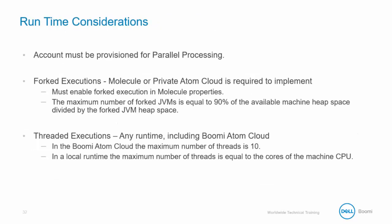There are several runtime considerations as well. Your account must be provisioned for parallel processing. If you want to use forked executions, a molecule or private atom cloud is required. You must enable forked executions in molecule properties. The maximum number of forked JVMs is equal to 90% of the available machine heap space divided by the forked JVM heap space.